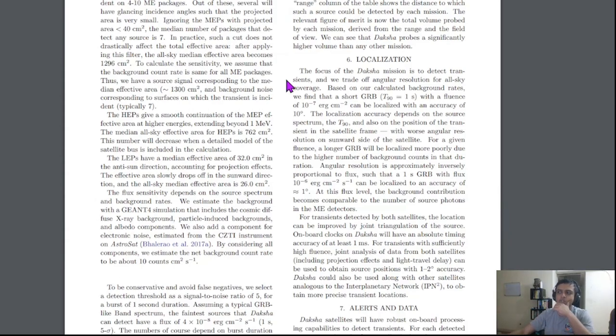The main focus of the Daksha mission would be to detect transients and then based on the data, quickly post-process and first see the T90, which is the 90% time interval of that GRB. If it is a short GRB, we try and localize using various techniques, physics techniques like Compton imaging and so on.